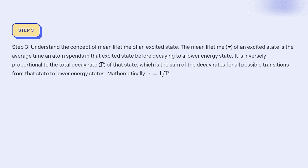Step 3: Understand the concept of mean lifetime of an excited state. The mean lifetime tau of an excited state is the average time an atom spends in that excited state before decaying to a lower energy state. It is inversely proportional to the total decay rate gamma of that state, which is the sum of the decay rates for all possible transitions to lower energy states. Mathematically, tau = 1/gamma.